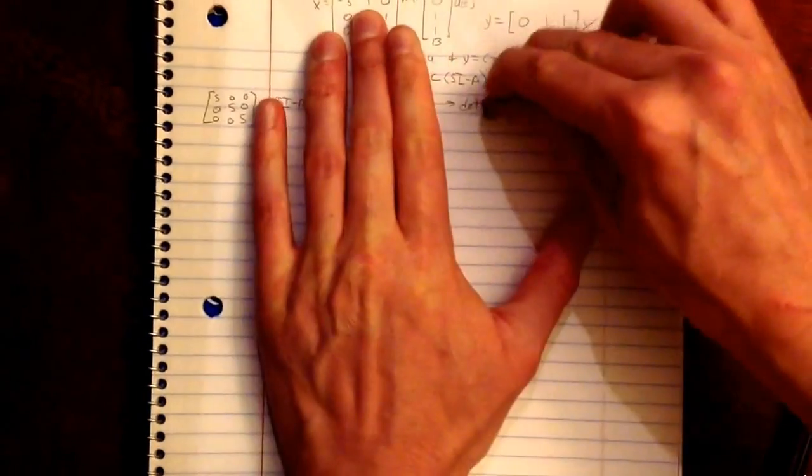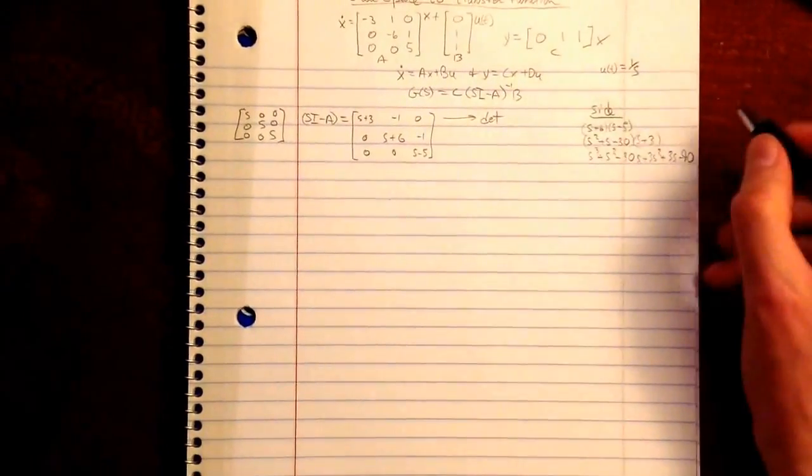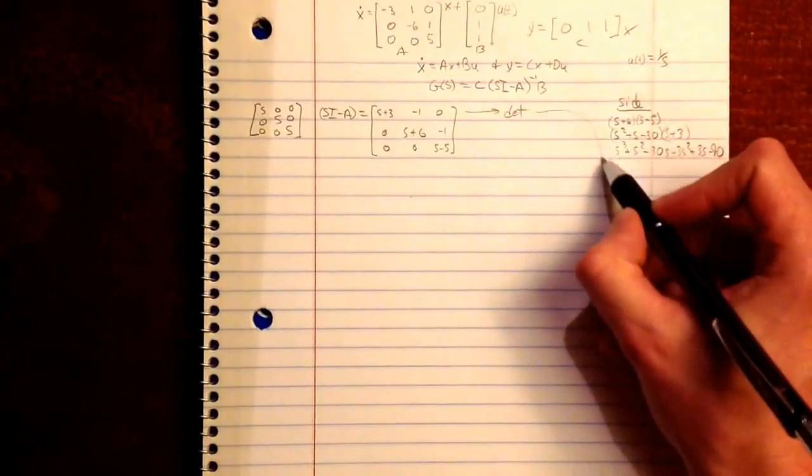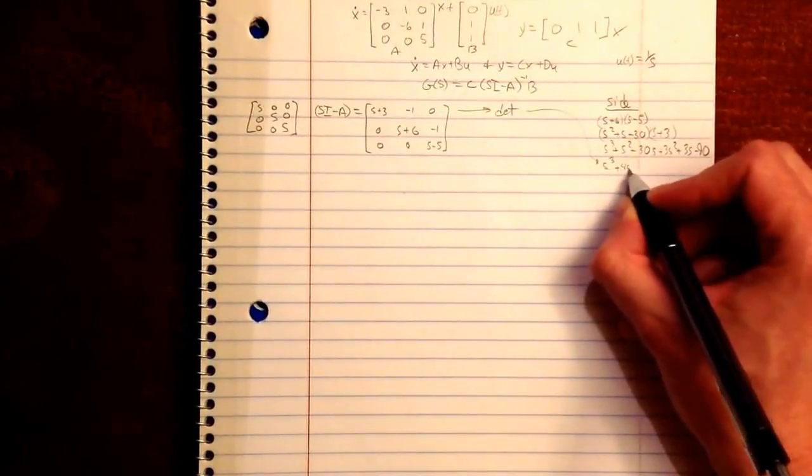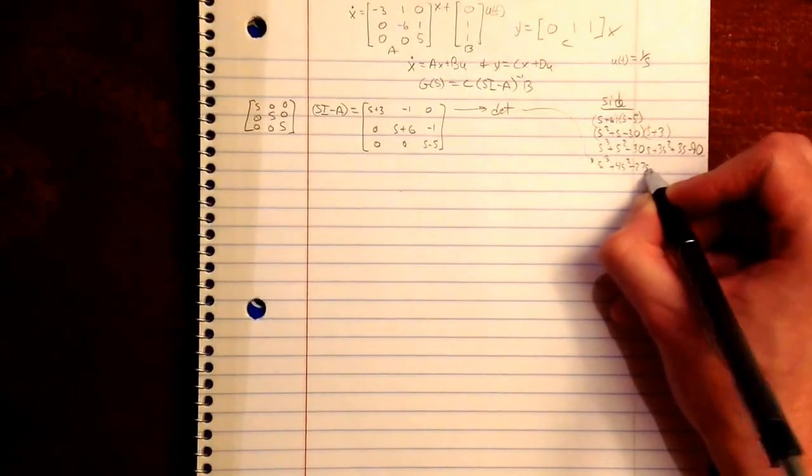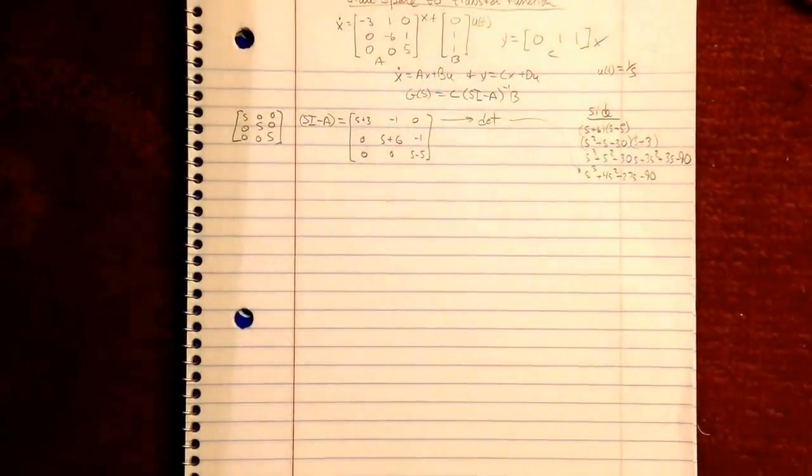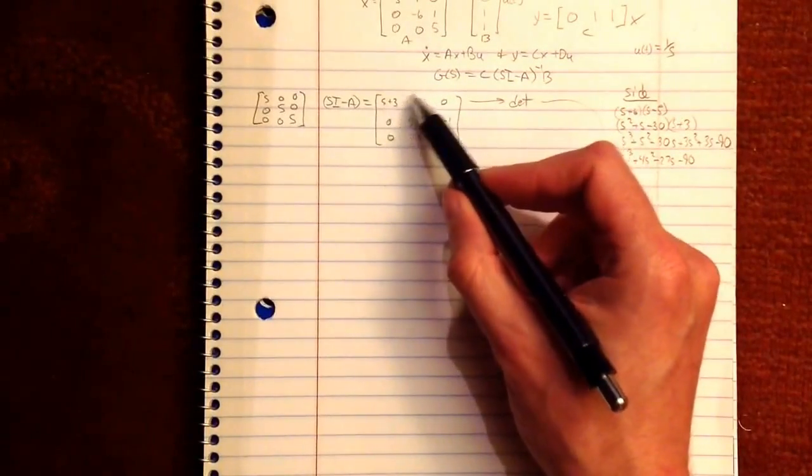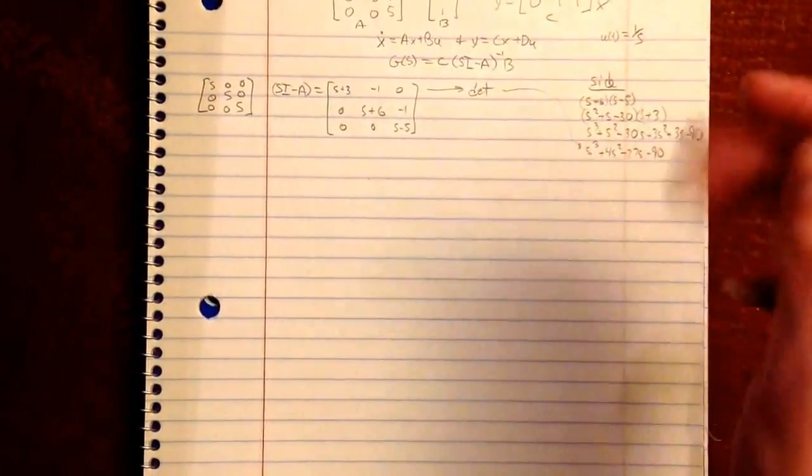Where's my eraser? Here we go. So you can simplify this to S cubed plus 4S squared, that is minus 27S minus 90. Now you then subtract this times, you exclude this row, this column. That's 0. Good. And that's 0. So this is your determinant. Success.